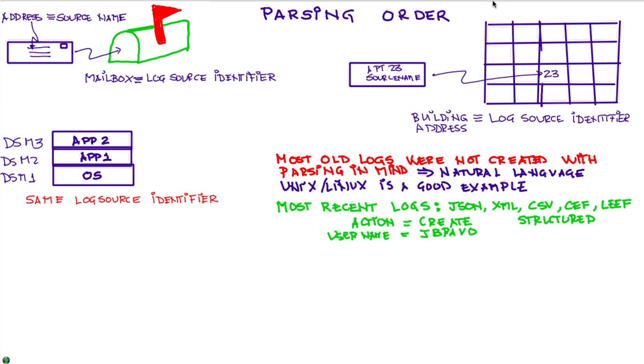But guess what? You're going to have a combination of old and new. Like in the building, you're going to have old and your own type of formats. And the objective of the mailman is to deliver those letters as quickly as possible and without putting the wrong letter into the wrong mailbox.